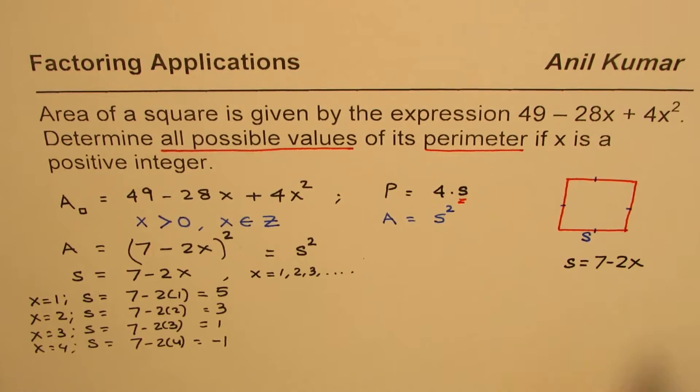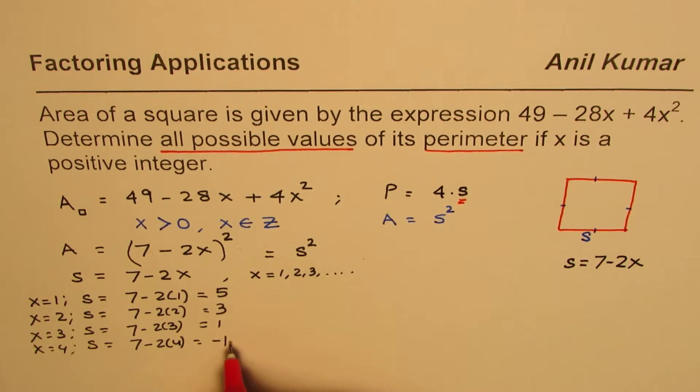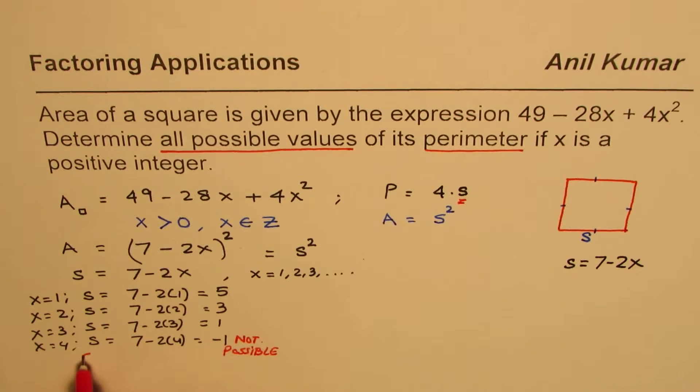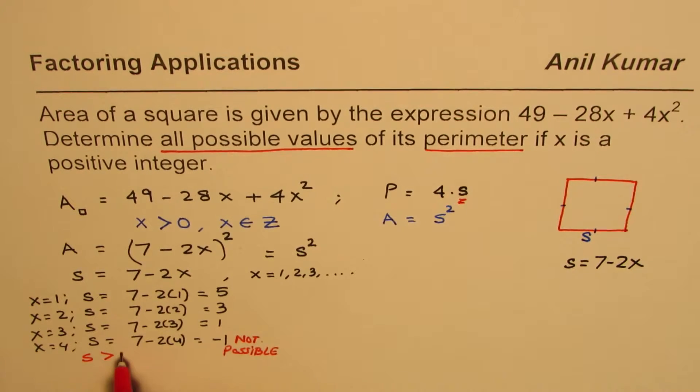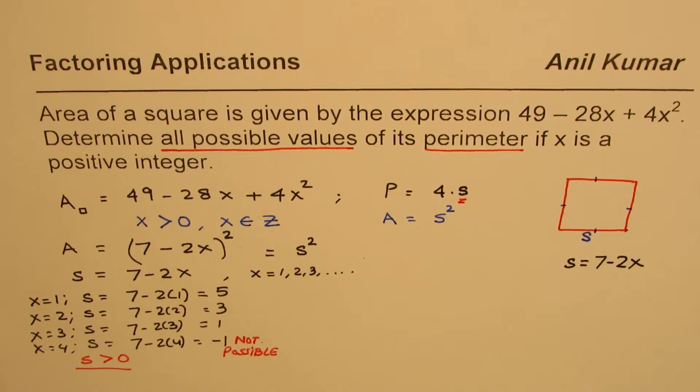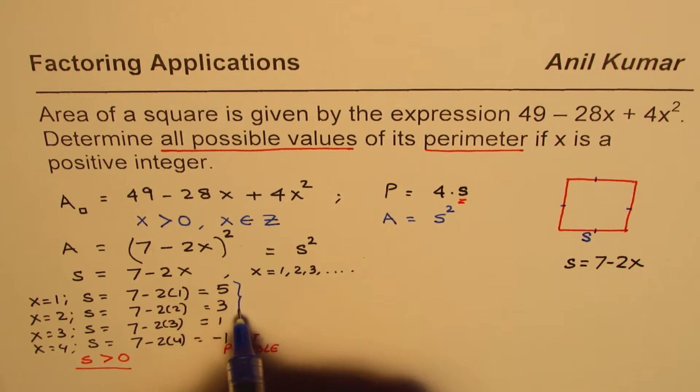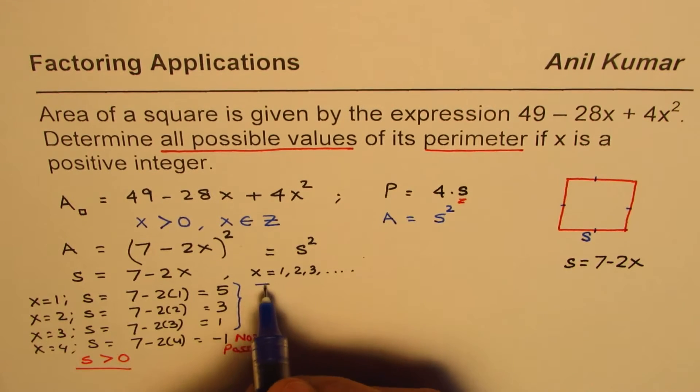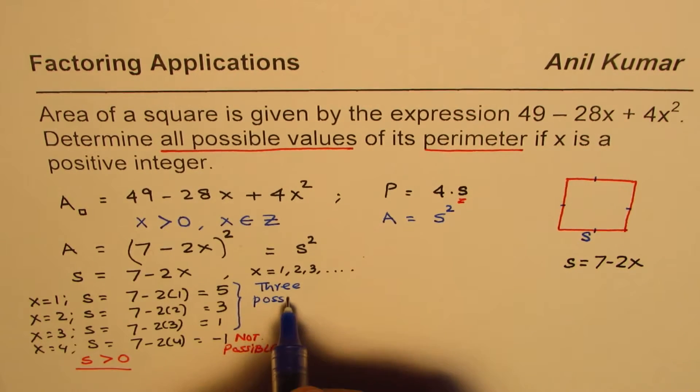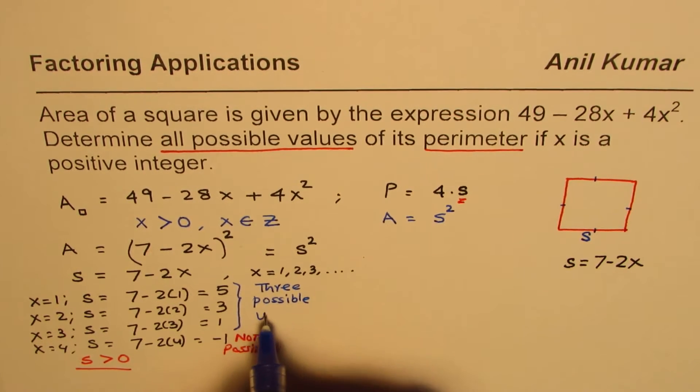Can the side length be negative? No, that is not possible. Since side length has to be positive, since s has to be greater than zero, it cannot be negative. So we have three possible values. These are the three possible values.